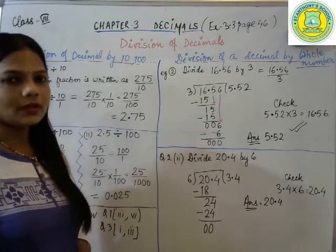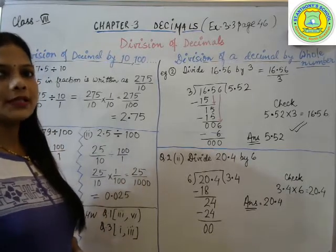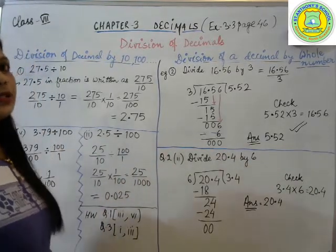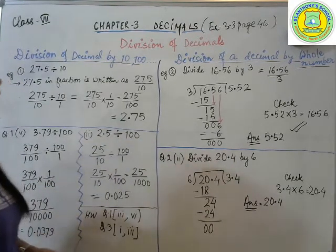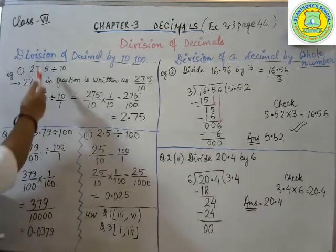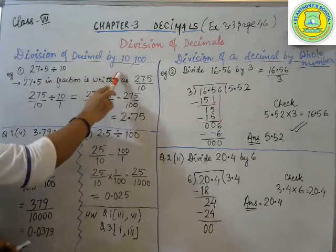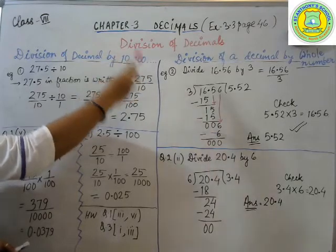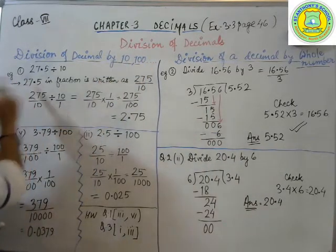By now you know how to add, how to subtract, how to multiply. So the last operation left is division of decimals. Now how to begin, everything I'll be explaining you with an example. Please look here. First topic will be division of decimal by ten, hundred, thousand, ten thousand. Everywhere the concepts will be same.